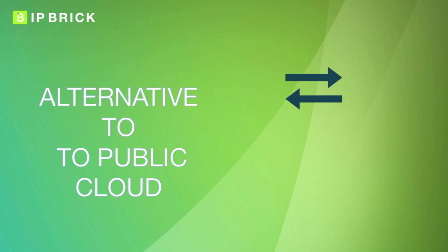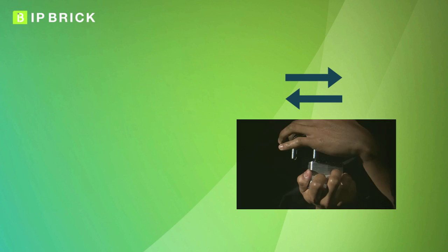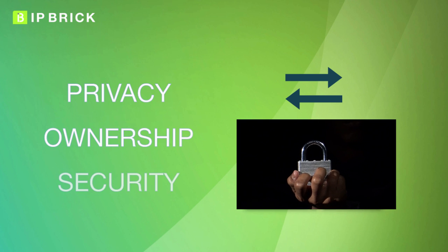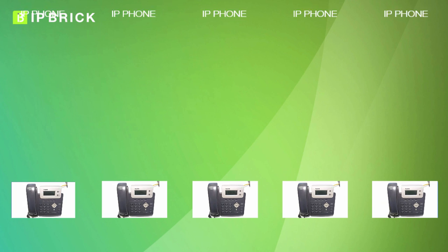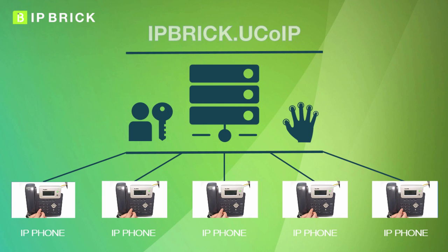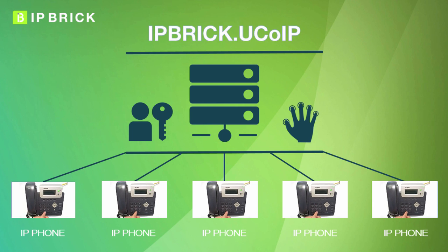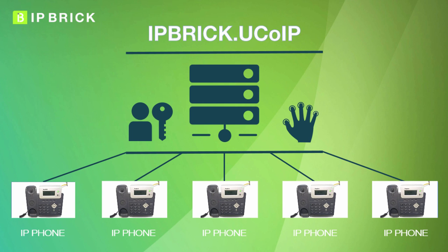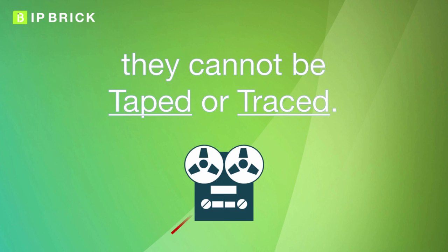IP Brick UKOIP becomes a true alternative and gives priority to privacy, ownership and security. Calls between IP phones connected to IP Brick UKOIP are completely confidential, and only individuals with access to IP Brick UKOIP can interfere with records and communications. They cannot be taped or traced.